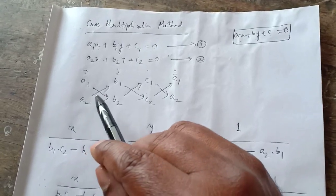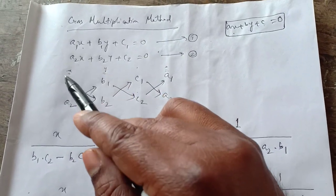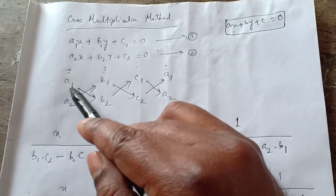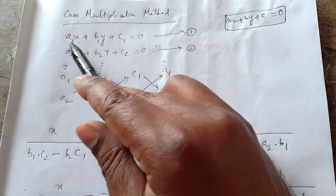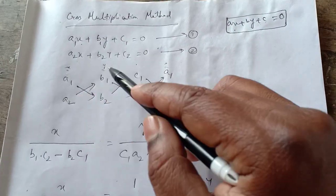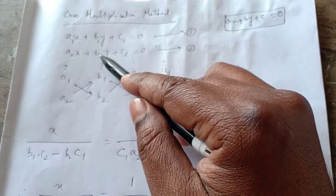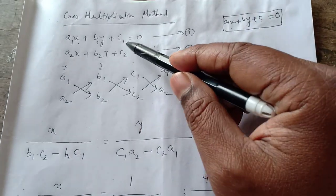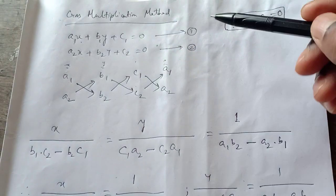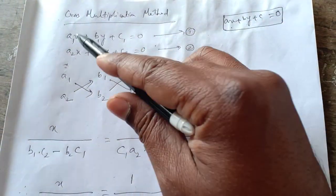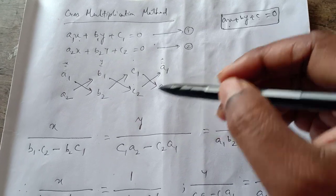The first step is to write down the coefficients of X — A1 and A2 — one below the other, then the coefficients of Y — B1 and B2 — and the constants C1 and C2, then again repeat the coefficients of X: A1 and A2.